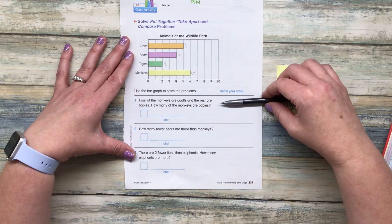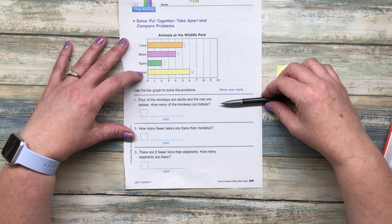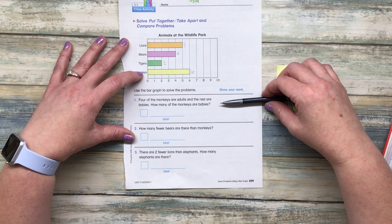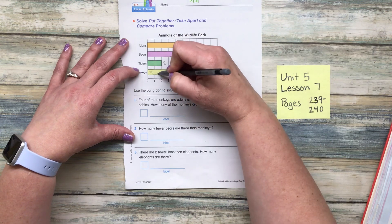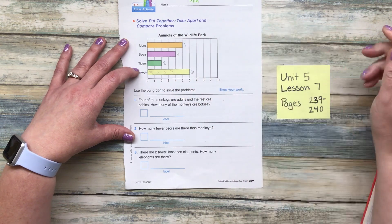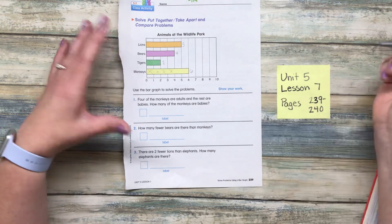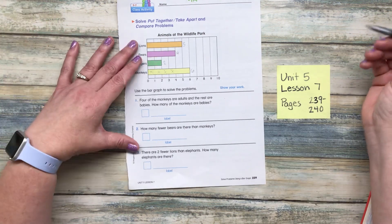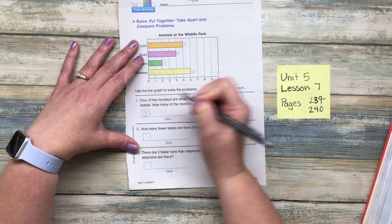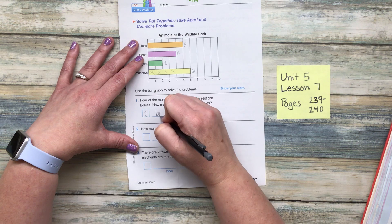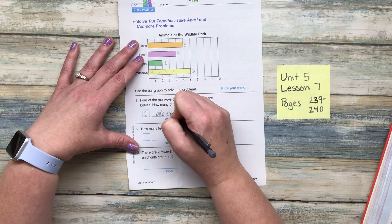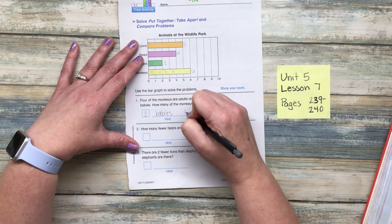Four of the monkeys are adults and the rest are babies. How many of the monkeys are babies? So I'm actually just going to go up here. There's four adults. How many are left? Two babies.